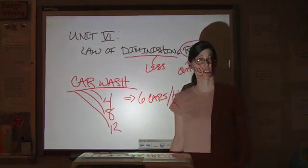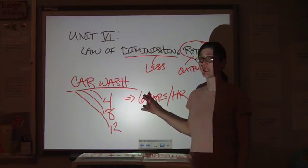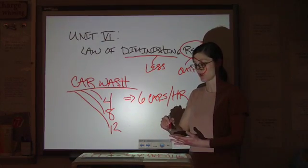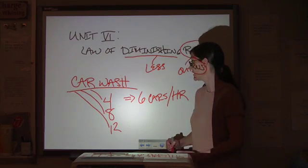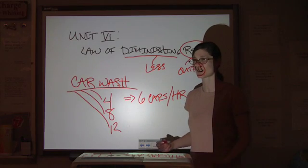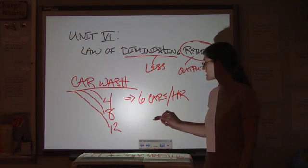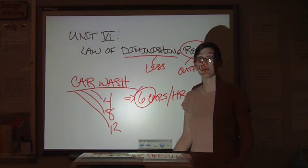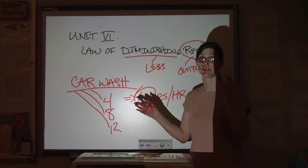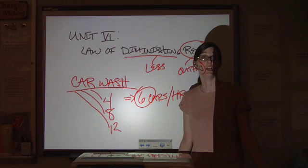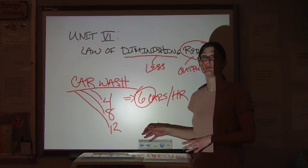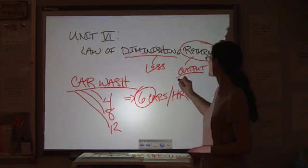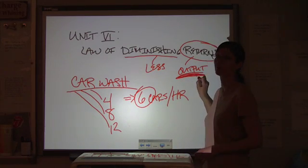Well, eventually, if you're not increasing any of your other inputs, you're not giving them more rags or more buckets or access to more sources of water, you just keep throwing more and more people at it, they're going to start tripping over each other until it's not going to be six cars per hour. It might only be two or three. And then maybe you end up with so many bodies in the way that you can't get anything done. That's the idea of diminishing returns. If you keep increasing your inputs, you don't necessarily keep getting more and more out of your production process.